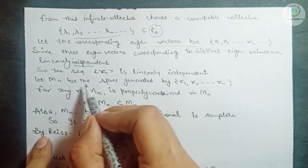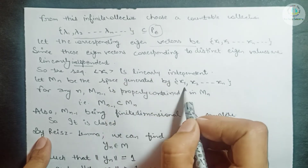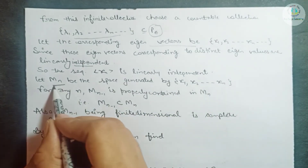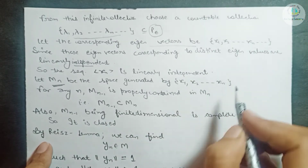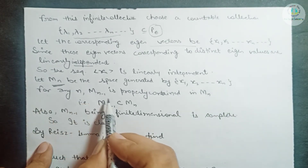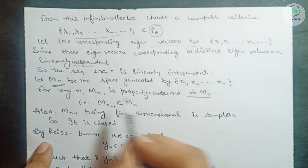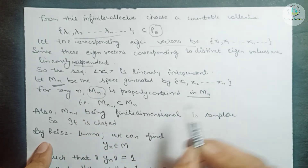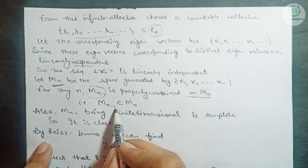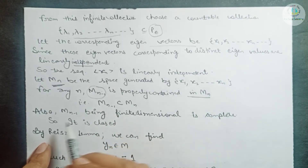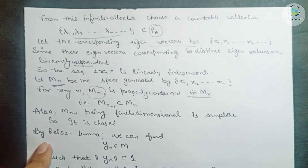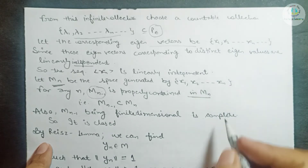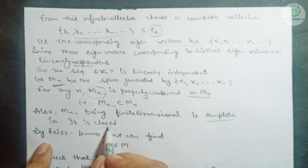Let Mₙ be the space generated by the elements x1, x2, ..., xn. For any n, Mₙ₋₁ is properly contained in Mₙ, i.e., Mₙ₋₁ is a proper subset of Mₙ. Also, Mₙ₋₁ being finite dimensional is complete, and every complete set is closed, so Mₙ₋₁ is also closed.